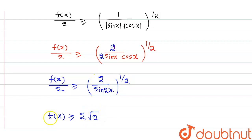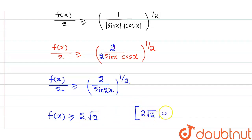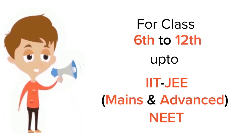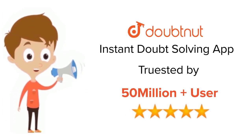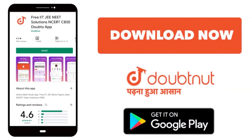Therefore, the range of f(x) = 1/|sinx| + 1/|cosx| is [2√2, ∞). Thank you. For class 6-12, IIT JEE and NEET level, trusted by more than five crore students — download the Doubtnut app.